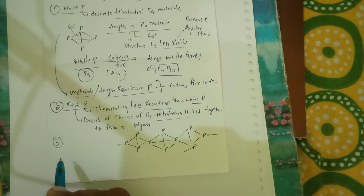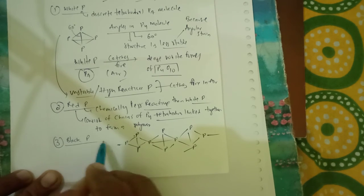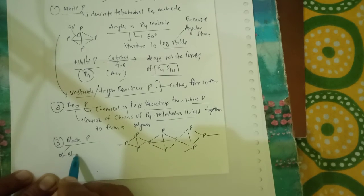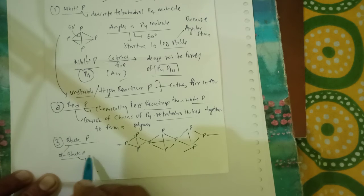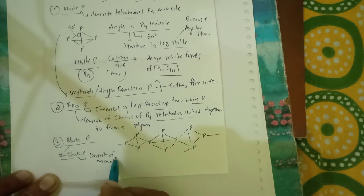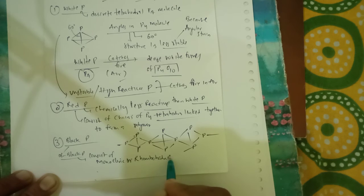Red Phosphorus, this is what the structural arrangement for red Phosphorus. Let us see the third case, that is your black Phosphorus. In case of black Phosphorus, we will see that alpha black Phosphorus consists of monoclinic or rhombohedral crystals.